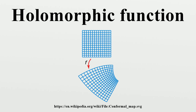In fact, it is a locally convex topological vector space, with the seminorms being the suprema on compact subsets. From a geometric perspective, a function F is holomorphic at Z0 if and only if its exterior derivative dF in a neighborhood U of Z0 is equal to F′ dZ for some continuous function F′. It follows that dF′ is also proportional to dZ, implying that the derivative F′ is itself holomorphic and thus that F is infinitely differentiable, is independent of the particular choice of path gamma, and thus F is a well-defined function on U having F(Z0) = F0 and dF = F′ dZ.